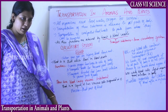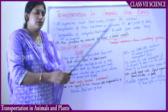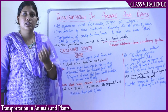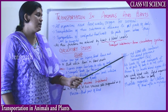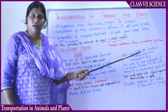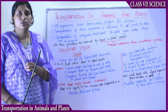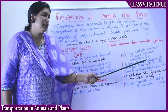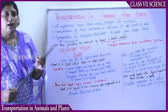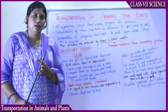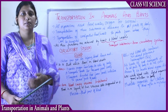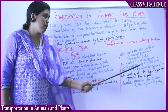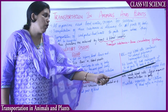RBCs are red blood corpuscles or red blood cells. They contain a red colored pigment called hemoglobin, which gives blood its red color. Blood is red because of the presence of RBCs, and RBCs are red because they contain hemoglobin. Hemoglobin essentially contains iron — that is why sometimes if you have iron deficiency, weakness, or anemia, doctors give you iron syrups to increase the blood quantity in your body.